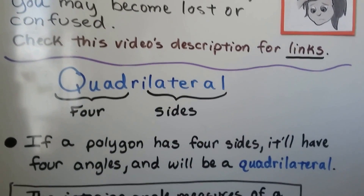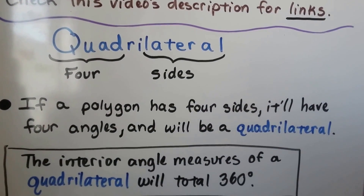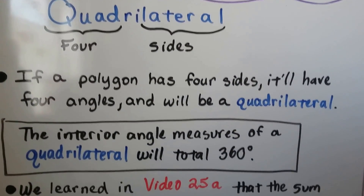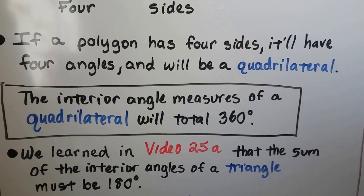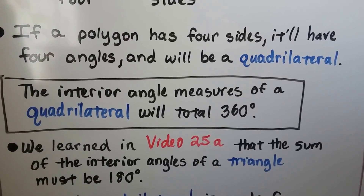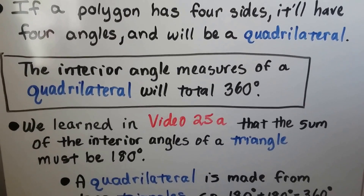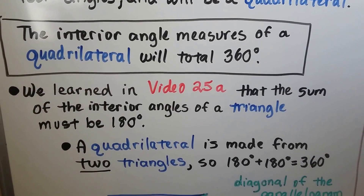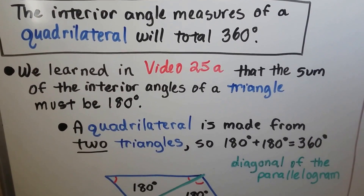The word quadrilateral actually means four sides. Quad means four, lateral means sides. If a polygon has four sides, it'll have four angles, and it'll be a quadrilateral. The interior angle measures of a quadrilateral will total 360 degrees.